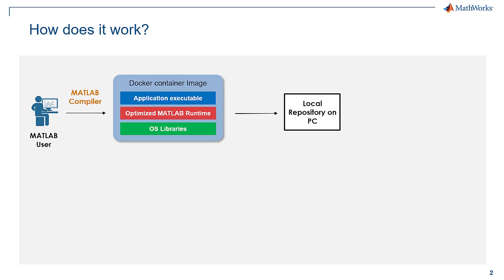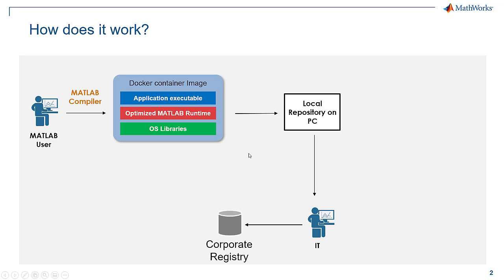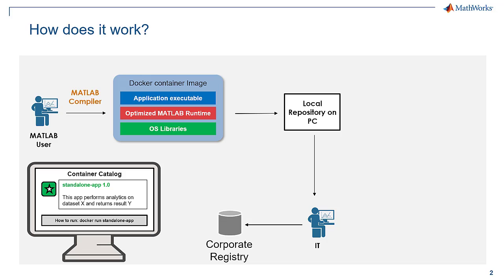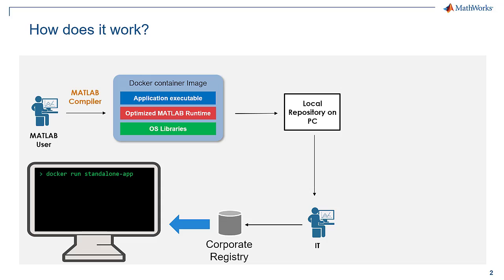This Docker container image is saved onto your local repository on your PC. At some point, this container may be passed on to your IT department, which posts it into a corporate registry. The users in your organization can browse this registry and may decide to run it using the docker run command.